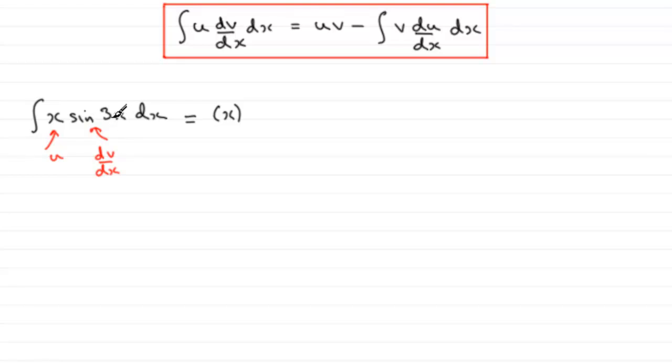Now the integral of sine 3x is going to be minus a third cos 3x. Now we do minus the integral of the part we just integrated, which was this part. So we just need to copy that bracket back in again, minus a third cos 3x, and we multiply it by the differential of the first part, our part u, which was x. Differentiate x with respect to x and you get 1. So just put a dx there, we're integrating now respect to x.